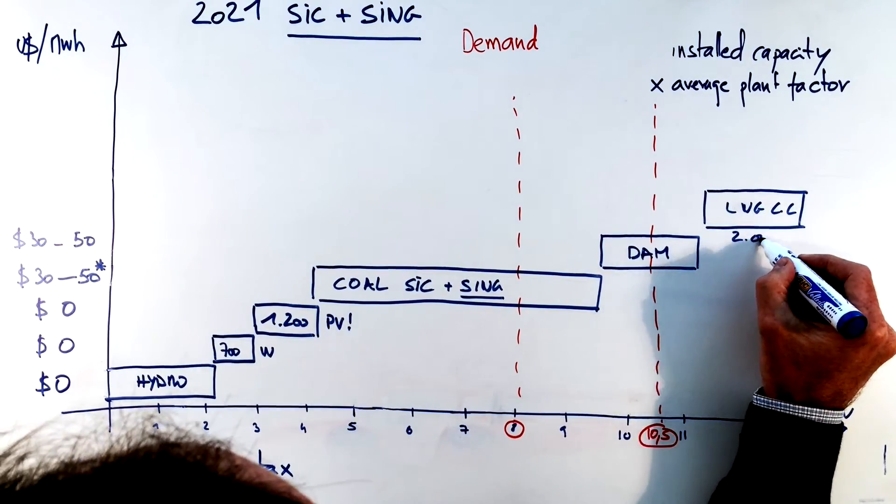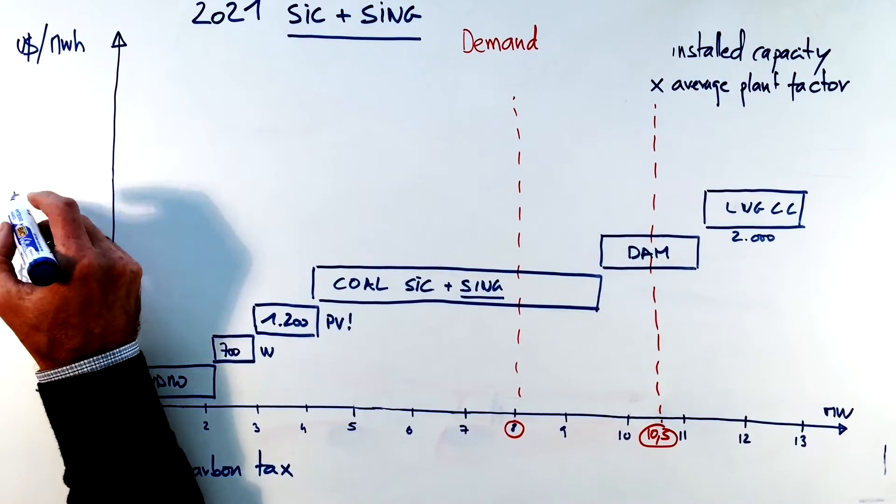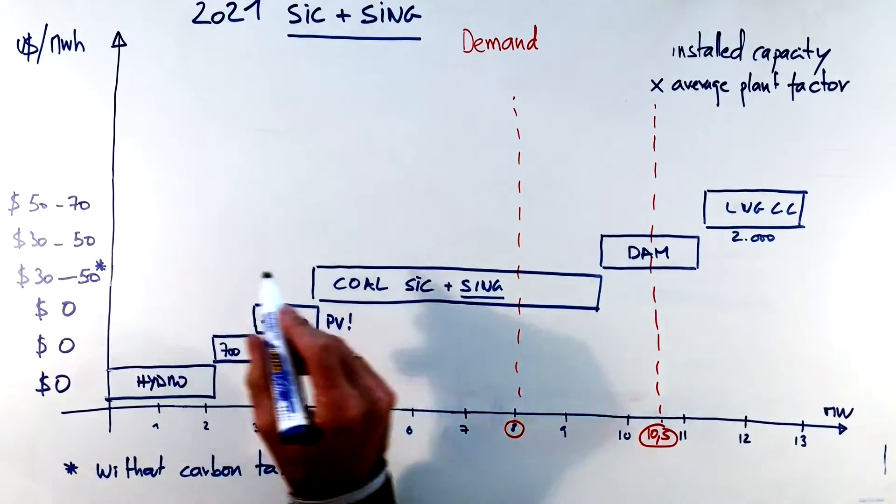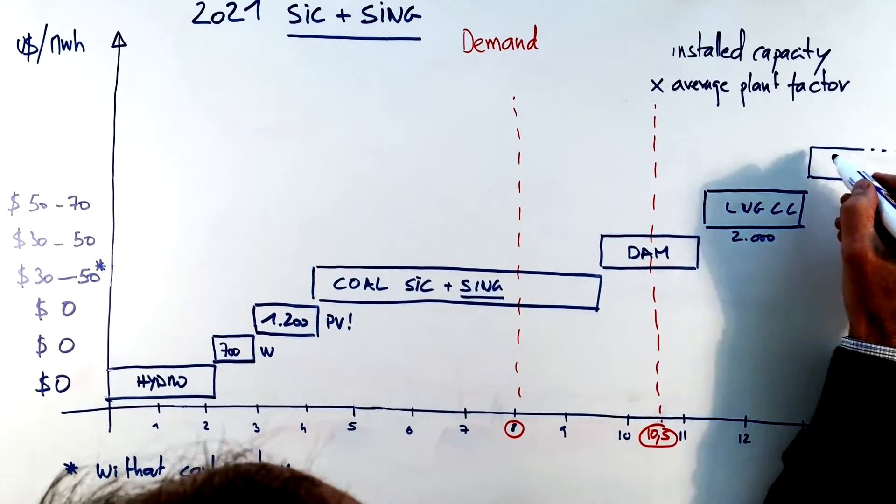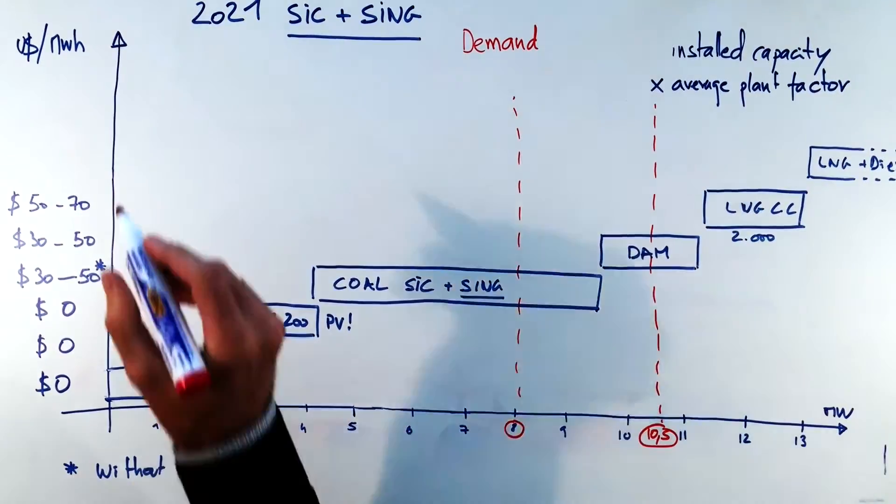DAM is more or less unchanged with a variable cost of 32 to 50. Then on top of that we still have our combined cycles LNG, 2,000 megawatts because we have more coming from the SING and on top of that our all types of engines, LNG and diesel.